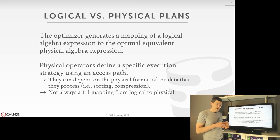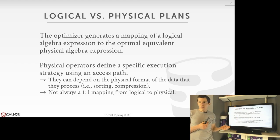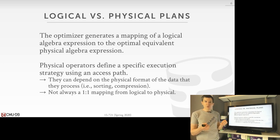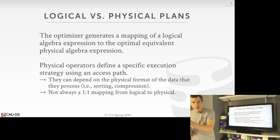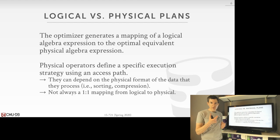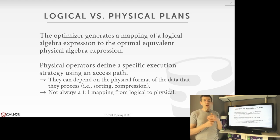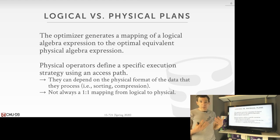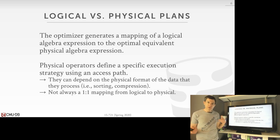The physical plan operators have low-level information specific to the physical properties and format of the data they're accessing. Physical operators may know that data is sorted on a given column, or that it's compressed in a certain way. The logical plan has no notion of this — it just knows about relations. Importantly, there's not always a one-to-one mapping from logical operators to physical operators.